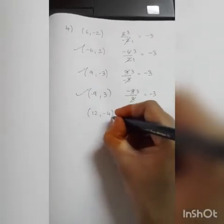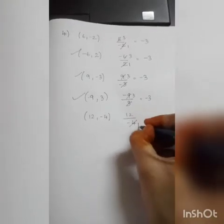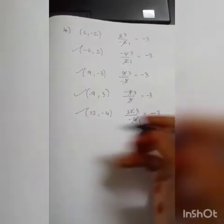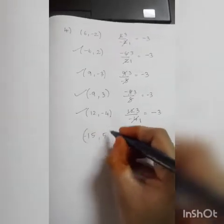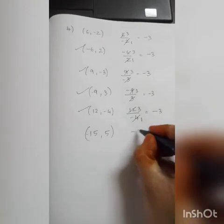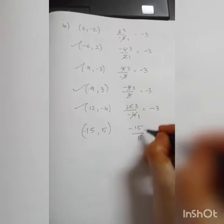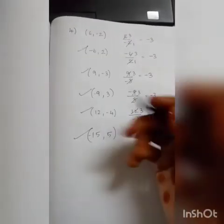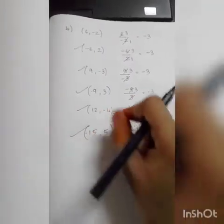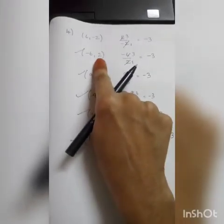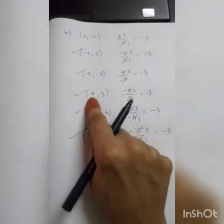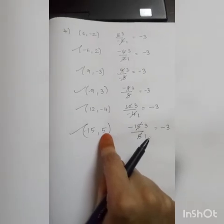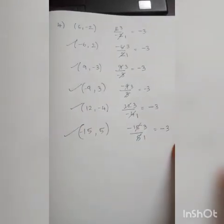Next: 12 comma minus 4. So 12 divided by minus 4 — 4 threes are 12 — minus 3. So this is my fourth answer. Likewise, minus 15 comma 5. Minus 15 divided by 5 — 5 threes are 15 — answer is minus 3. So what are the 5 pairs? They asked only 5 pairs, so I have given only 5 pairs: minus 6 comma 2; 9 comma minus 3; minus 9 comma 3; 12 comma minus 4; minus 15 comma 5. Likewise, you can get many pairs which give minus 3 as the answer when dividing. Understood your fourth question?